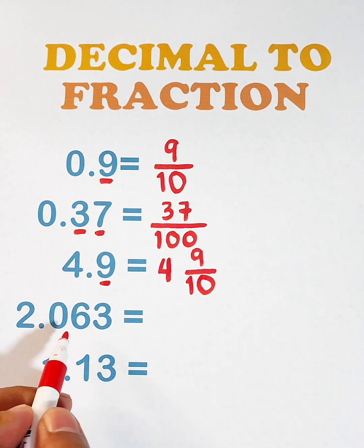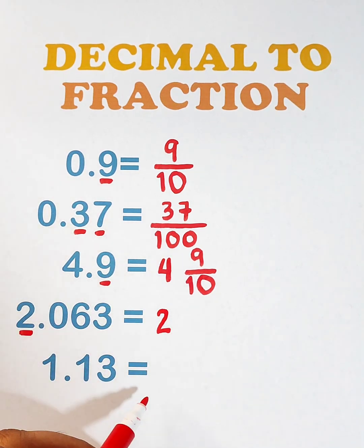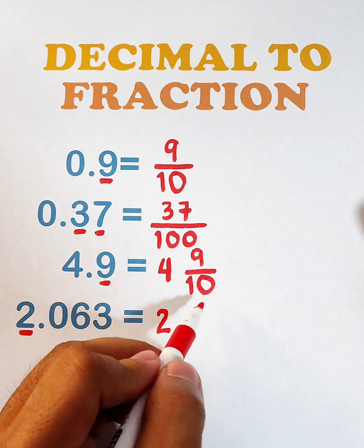Next, we have 2.063. First, we have the whole number, 2. So we will put that as a whole number here. And as for the numerator, we have 63 here. Get 63, 6 and 3 over.